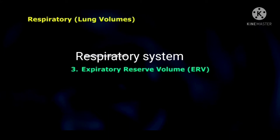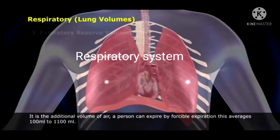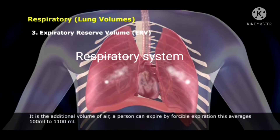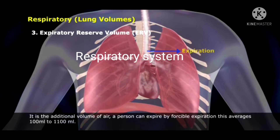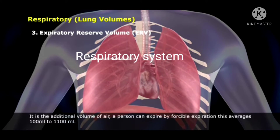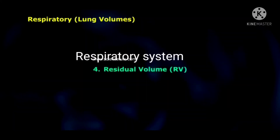The third one is expiratory reserve volume, ERV. It is the additional volume of air a person can expire by a forcible expiration. This averages 1,000 ml to 1,100 ml.